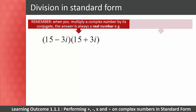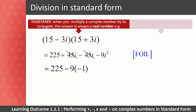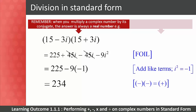Also, 4i − 7 becomes −4i − 7. Remember: when you multiply a complex number by its conjugate, the answer is always a real number. For example: (15 − 3i)(15 + 3i) = 225 + 45i − 45i − 9i². The ±45i terms cancel, and substituting i² = −1 gives 225 + 9 = 234, which is indeed a real number.